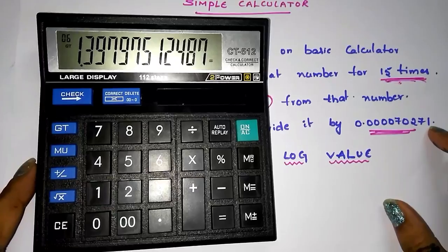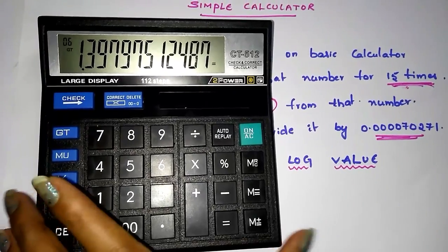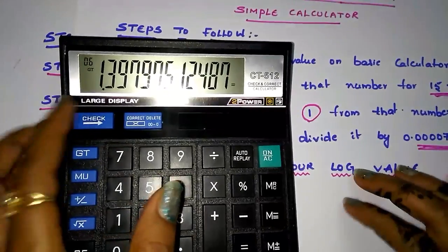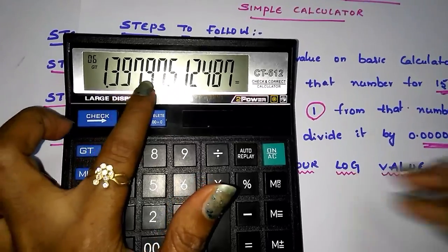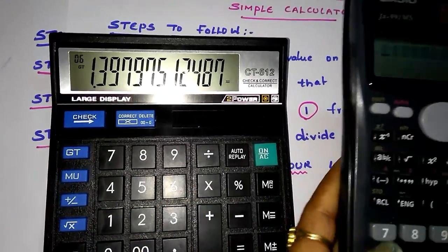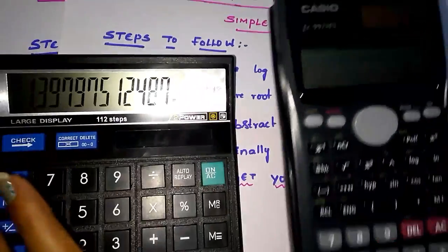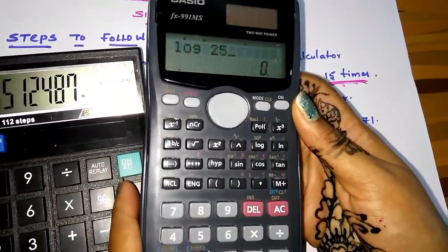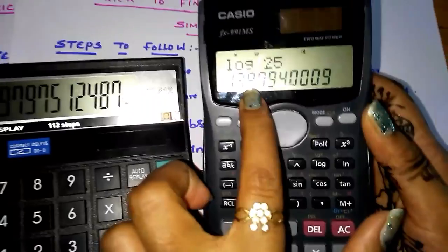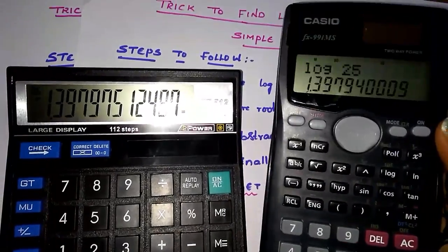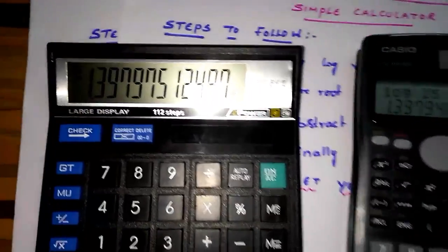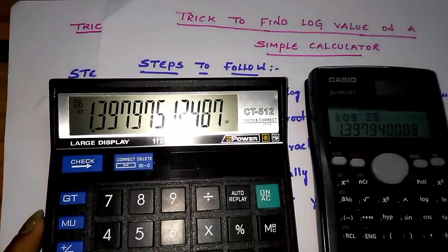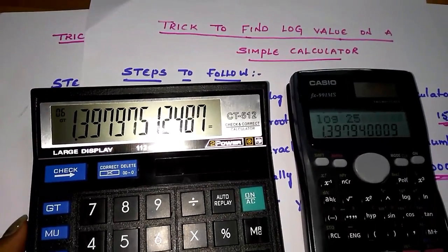This is the log of 25 value. Let's check that we got 1.3979. See this, log 25, see 1.3979. That's it, it's very easy students. If you find this trick is useful for you, please give your like and share this video to your friends.